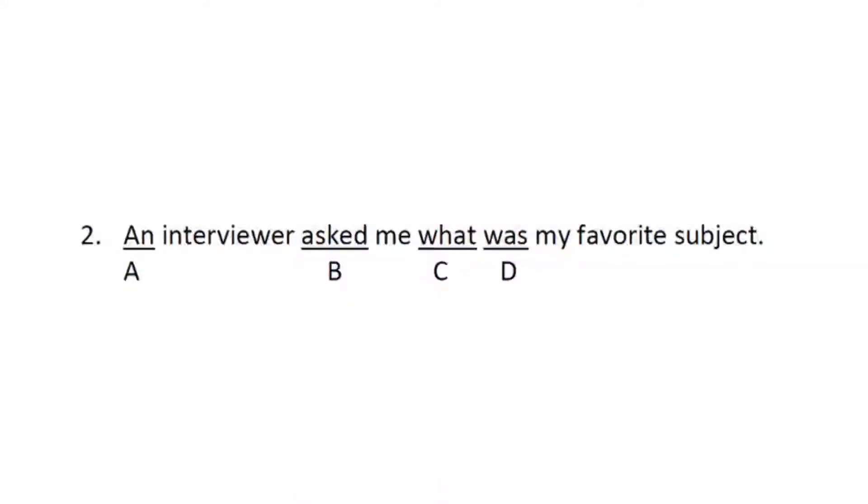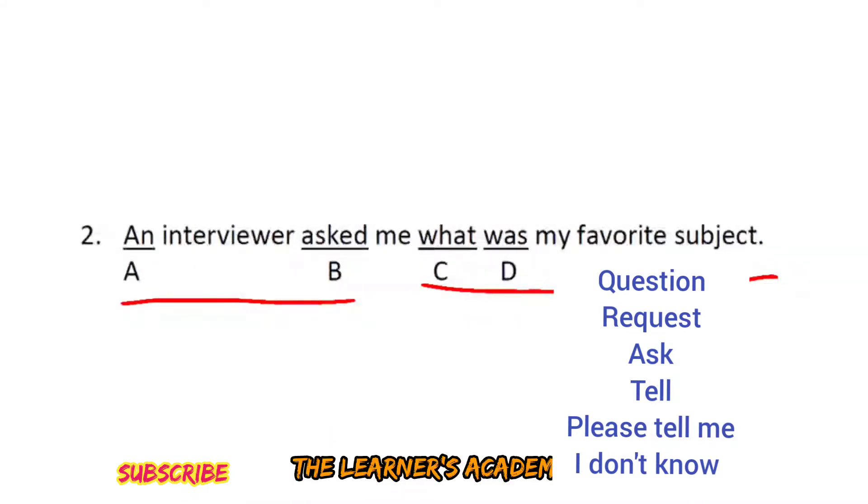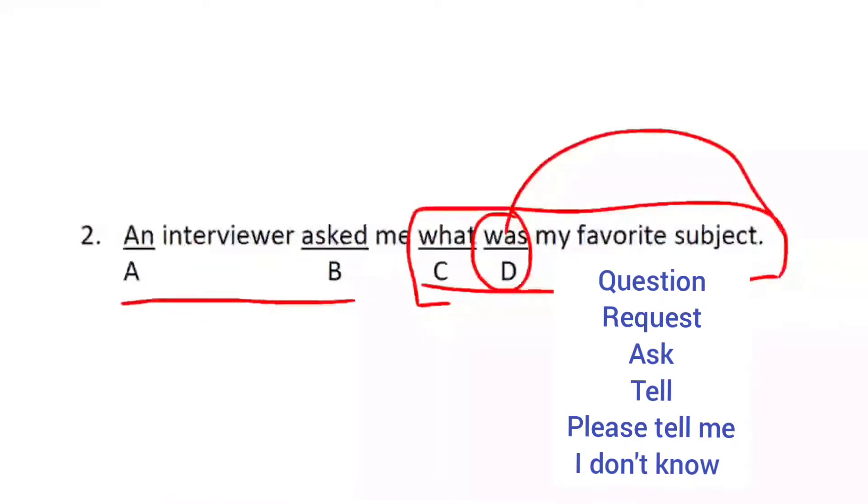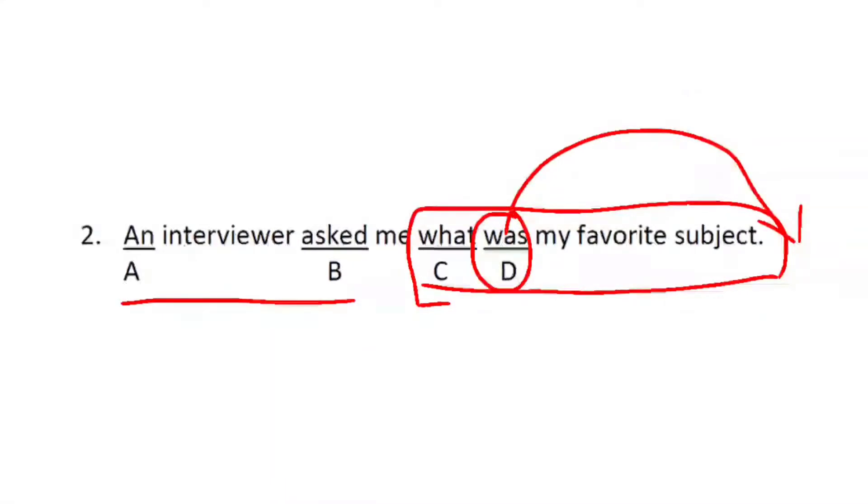An interviewer asked me what was my favorite subject. When we use words like 'asked', 'questioned', 'requested', 'ordered', we use indirect questions. This is narration. In narration, when we have an interrogative sentence in indirect speech, we use indirect questions. What was my favorite subject is not correct. It should be: what my favorite subject was. The helping verb comes after the subject in indirect questions.